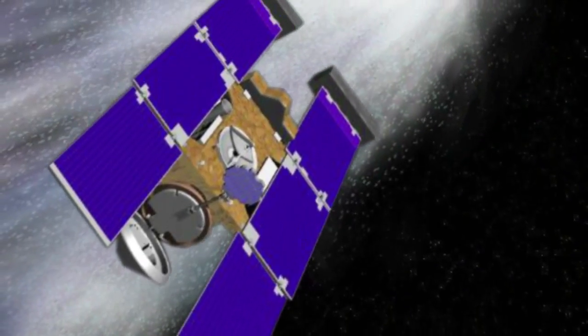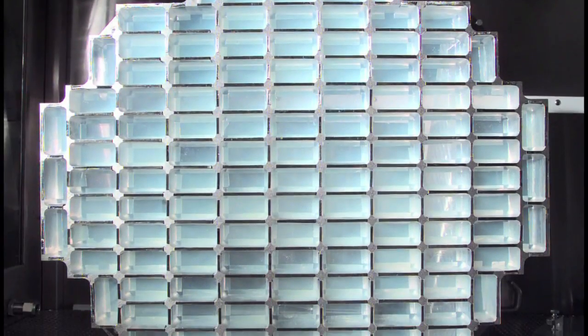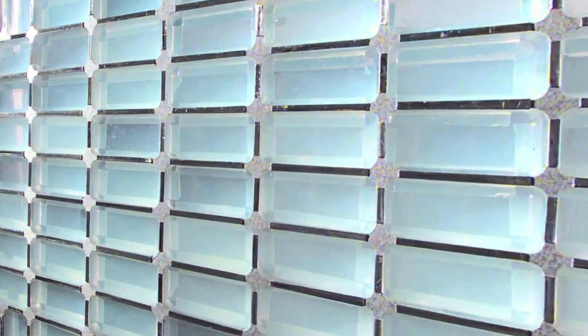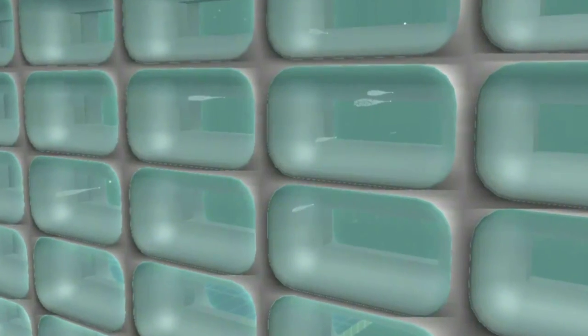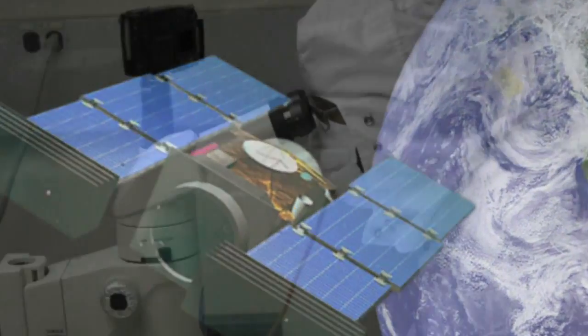NASA's Stardust satellite passed by the comet Wild 2 in 2004, and using a high-tech aerogel panel the size of a tennis racket, collected samples of gas and dust from the comet. The samples were sent back to Earth in 2006, and scientists have studied them ever since.